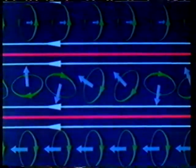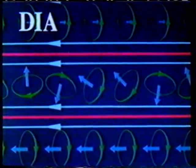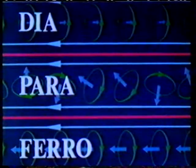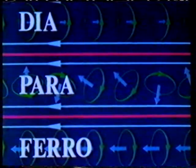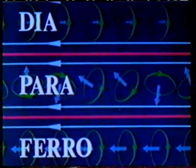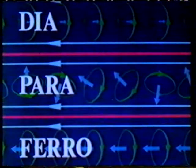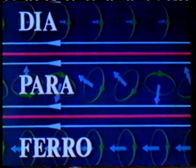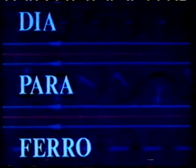To sum up, all materials can be divided into three groups depending on their behavior in a magnetic field. Diamagnetic materials show a magnetization which opposes the external field, whereas paramagnetic and ferromagnetic materials show a magnetization which reinforces the external field. Only in ferromagnetic materials is this contribution to the external field of great importance.